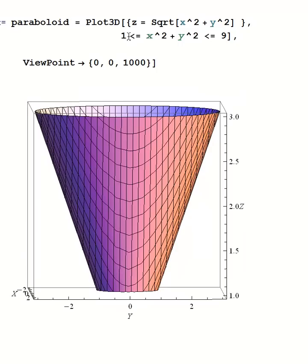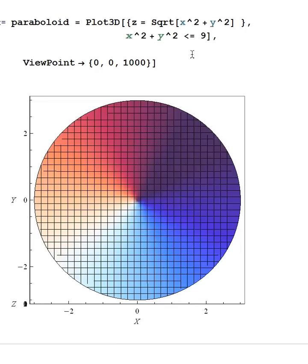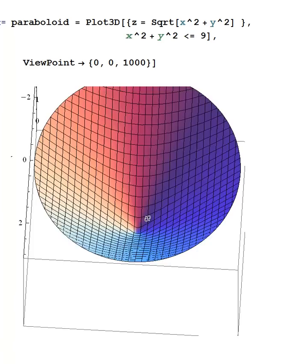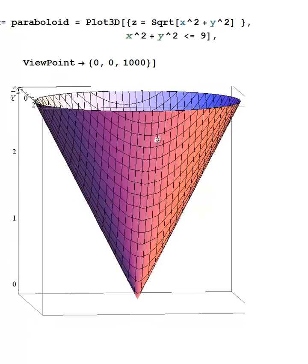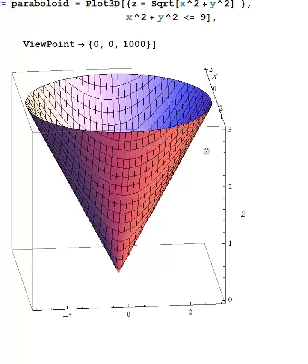And, of course, if you go back to saying that just plain old x squared plus y squared less than or equal to 9, the hole disappears. And when you look at your picture, you see a nice cone.